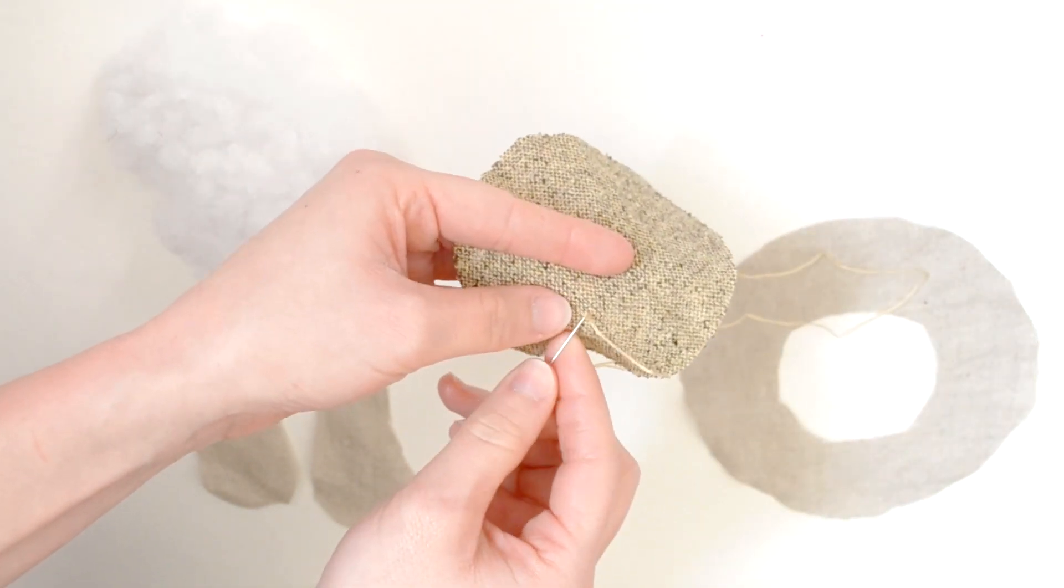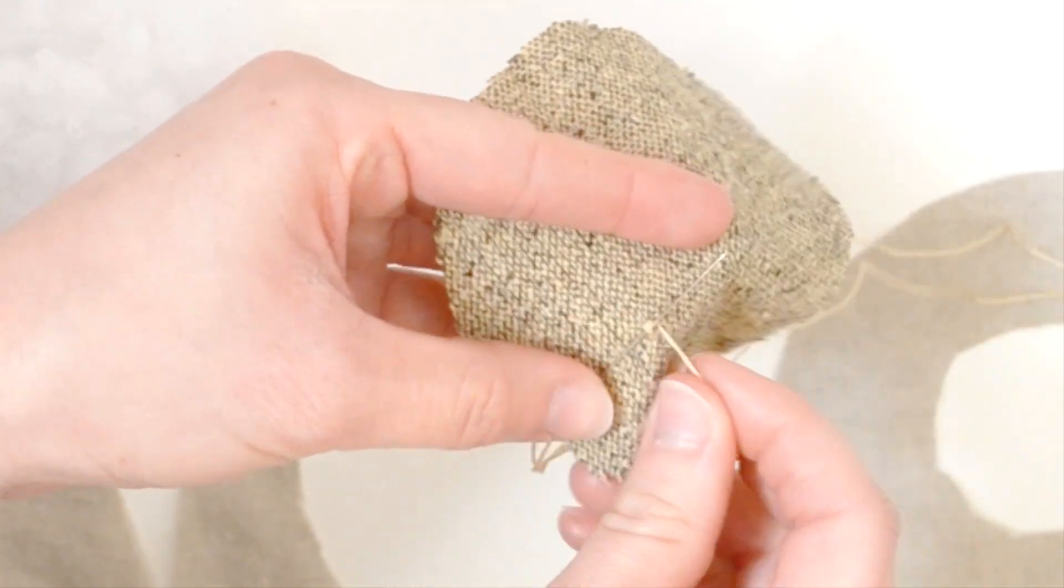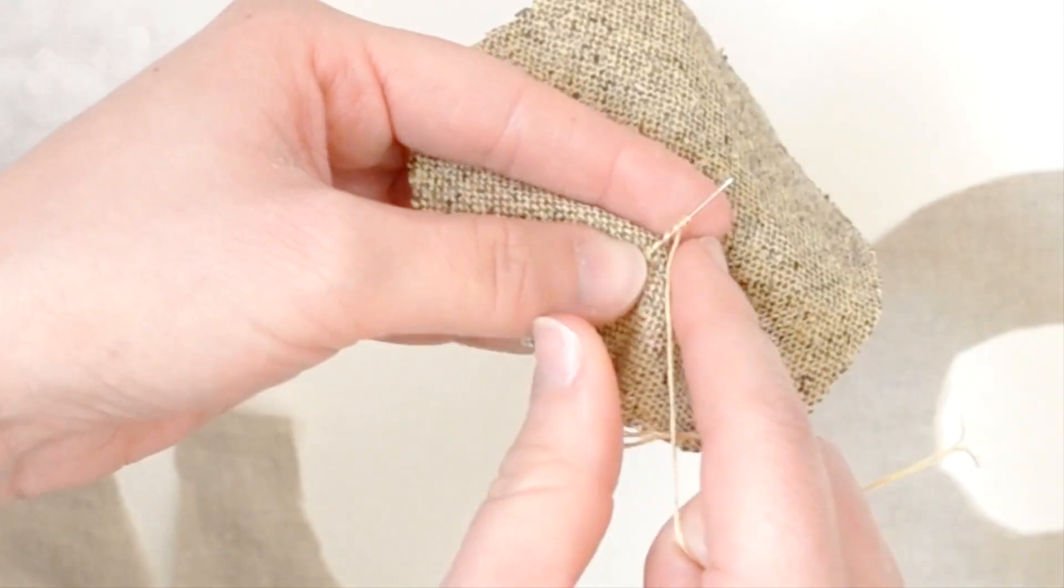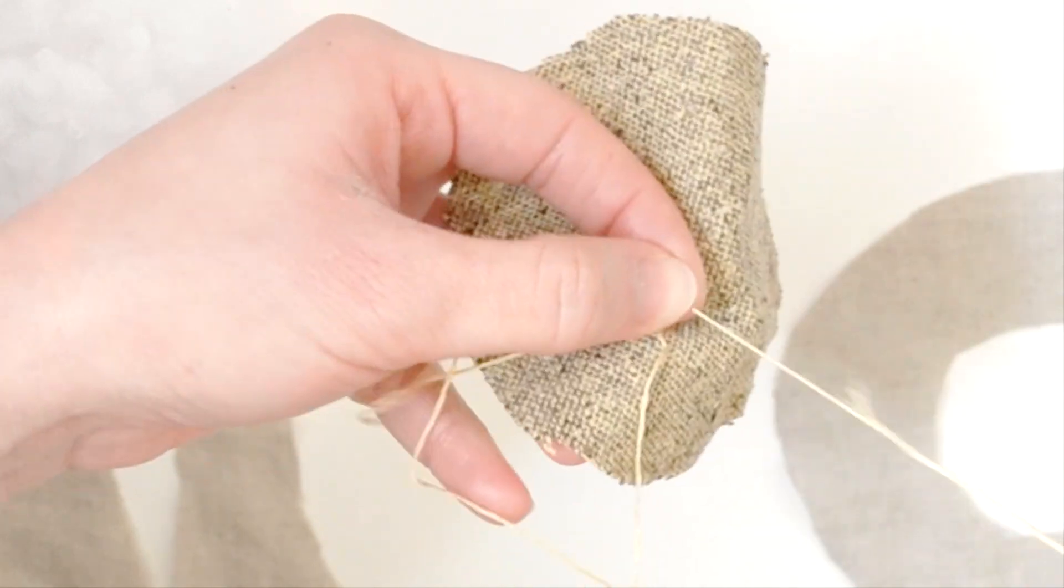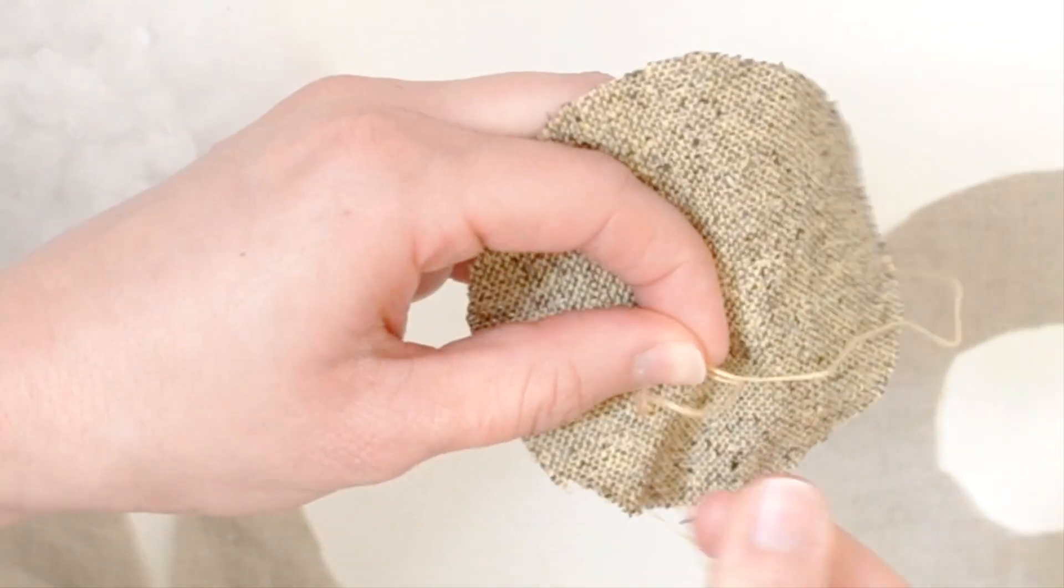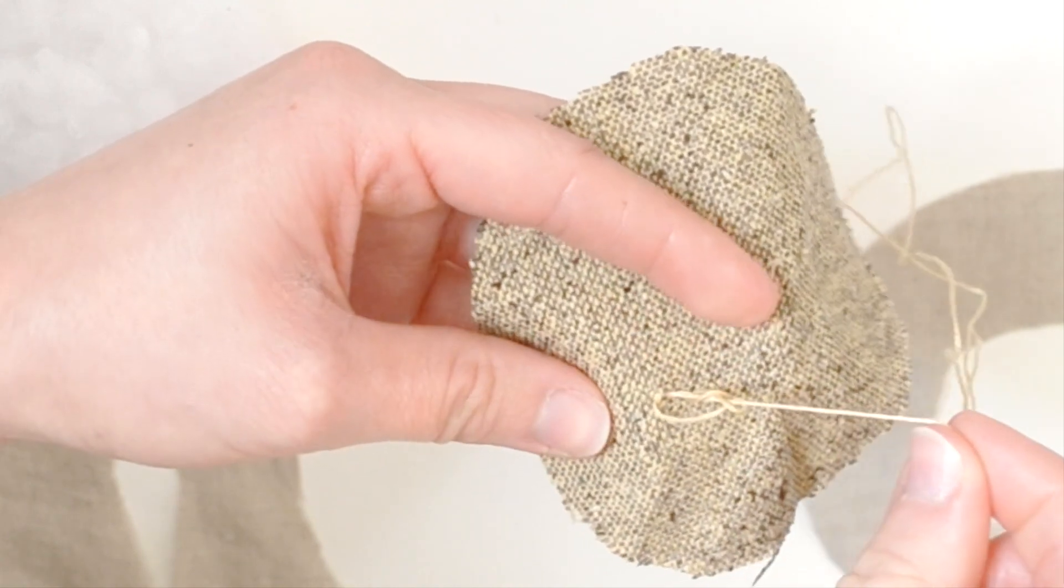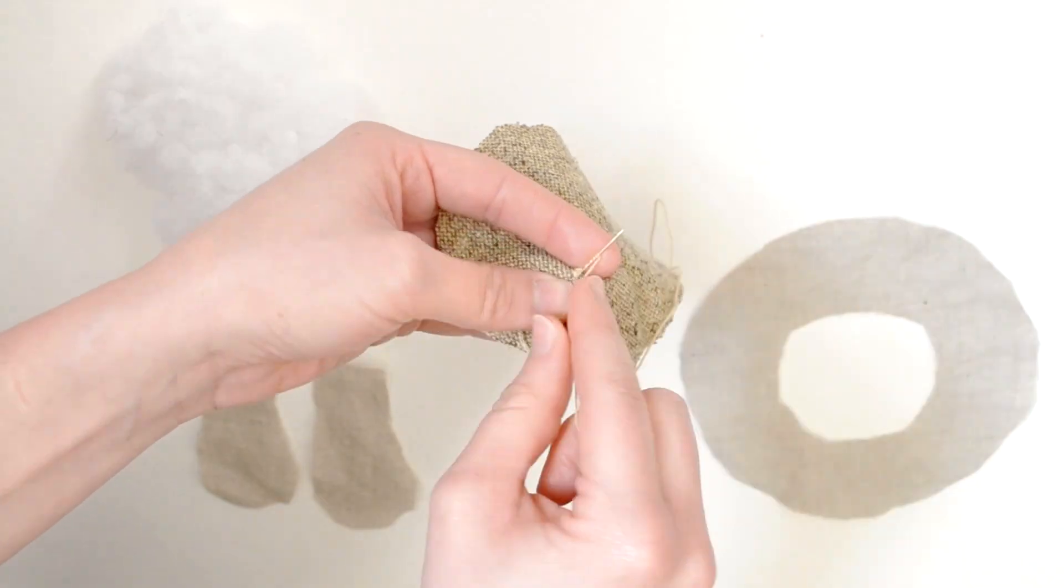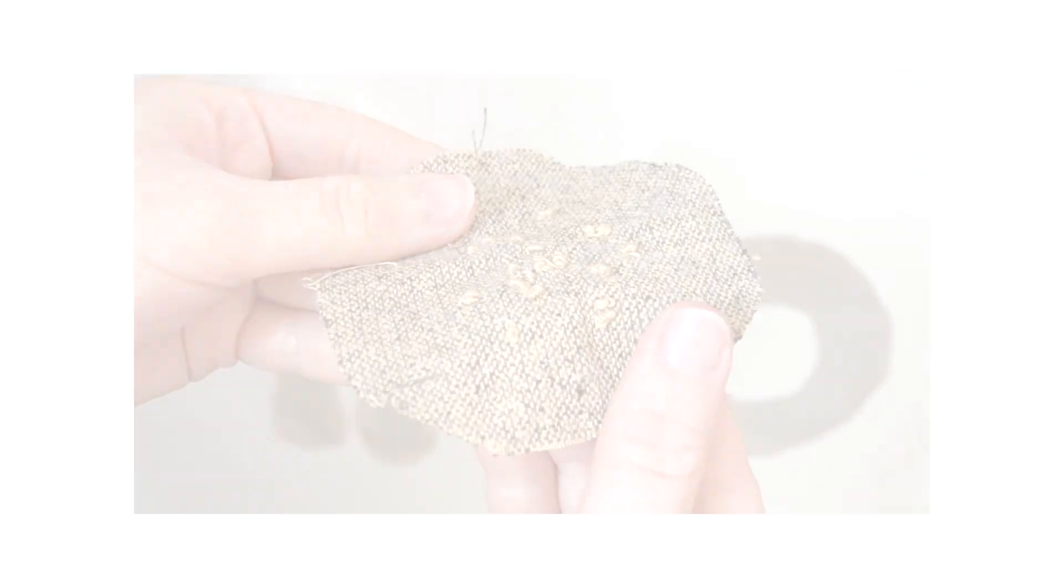This is an optional step, but if you'd like to decorate your mushroom cap, do this first. I'm using some large French knots to make the bumpy spots you see on the mushrooms. To make a French knot, pick up a tiny bit of the cloth with your needle and wrap your thread around the needle a few times before pulling the needle through. I'm making my knots rather large and messy, so I'm wrapping the thread around 7 or 8 times and it ended up looking like this.